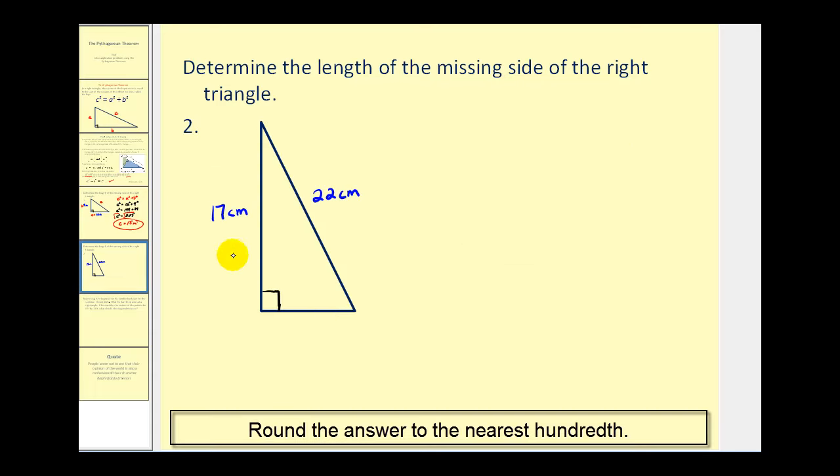If you look at our diagram now, we're trying to find the length of one of the legs. So again we start with the Pythagorean theorem. This would be side C opposite the right angle. Let's go ahead and call this side A and this side B. So using our Pythagorean theorem, we would have 22 squared must equal A squared, which we don't know, plus 17 squared.